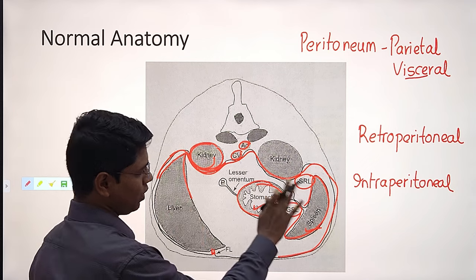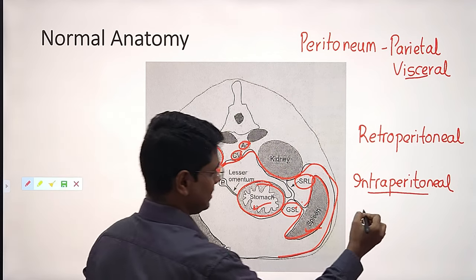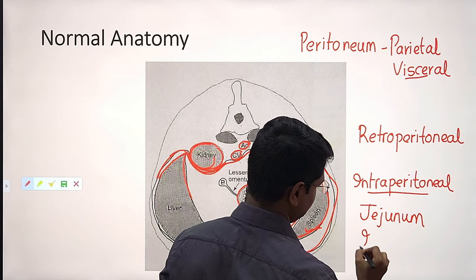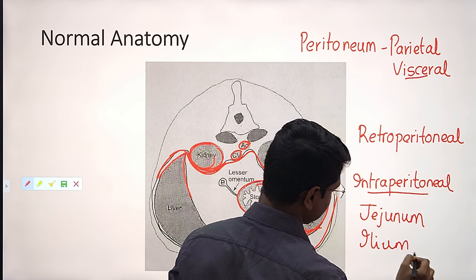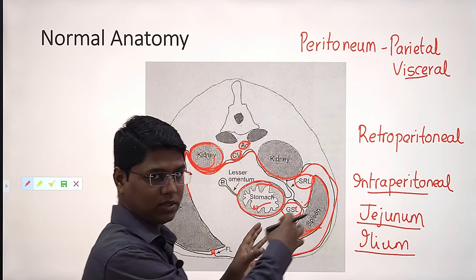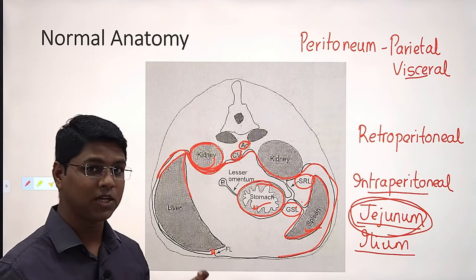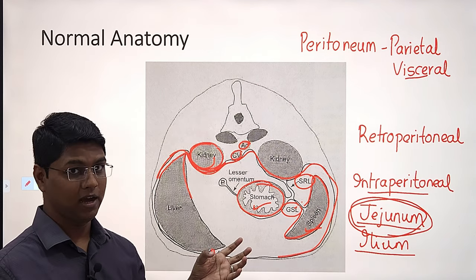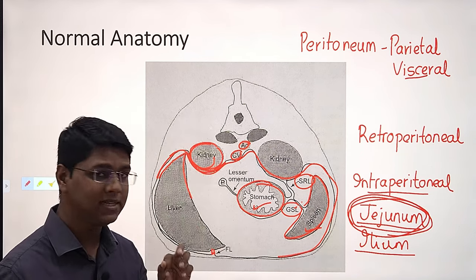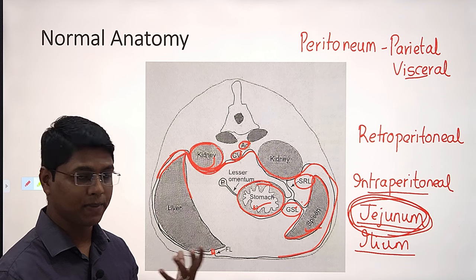Almost all organs, especially the intraperitoneal organs, are fixed — except the jejunum and ileum, especially the jejunum. Although the ileum is kind of fixed, the jejunum is most important. When we are interpreting radiographs, the position of the jejunum will tell you which organ is actually affected. Jejunum is only attached by the mesentery and does not have any other ligament to make its place fixed.